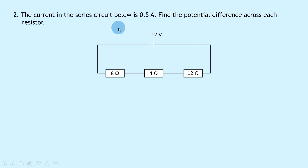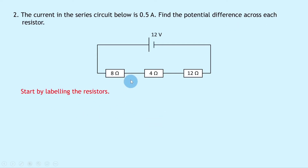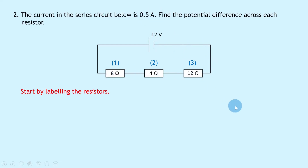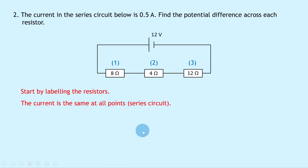Question 2 says the current in the series circuit below is 0.5 amps — find the potential difference across each resistor. We label the resistors 1, 2 and 3. In a series circuit the circuit rule for current says that the current is the same at all points, so 0.5 amps flows through all three resistors.